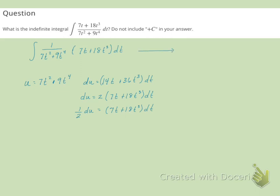So I'm going to rewrite this as the integral of 1 over u times 1 half du. Well, the 1 half can come out in front, and I'll have the integral of 1 over u du.